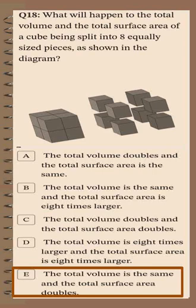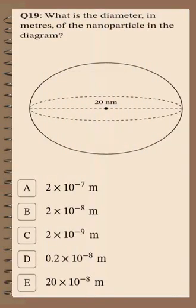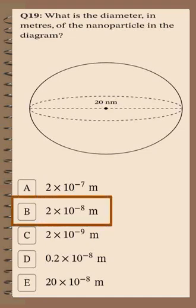Question number 19: What is the diameter in meters of a nanoparticle shown in the diagram? The nanoparticle has a diameter of 20 nanometers. Converting to meters by multiplying by 10 to the power of negative 9, the answer is 2 times 10 to the power of negative 8 meters, since 20 nanometers has one zero.